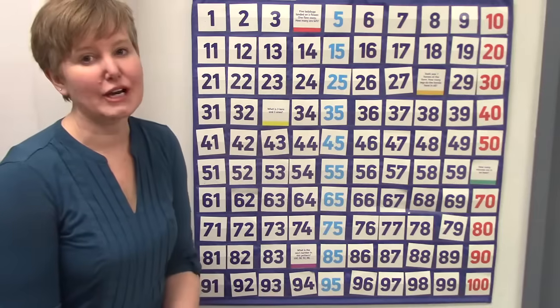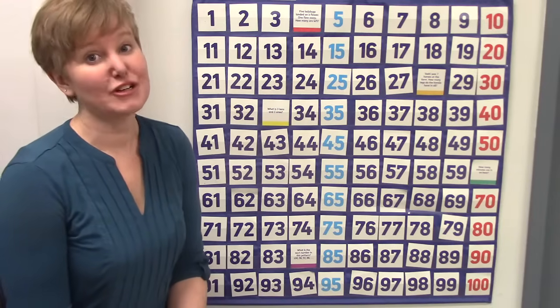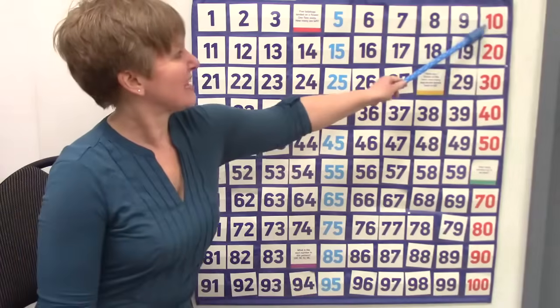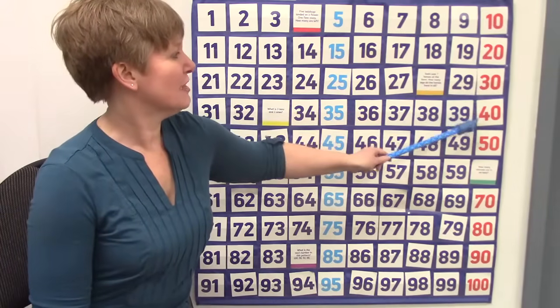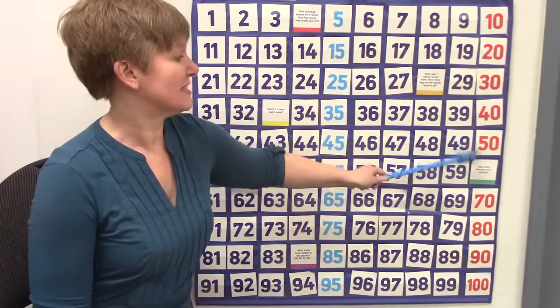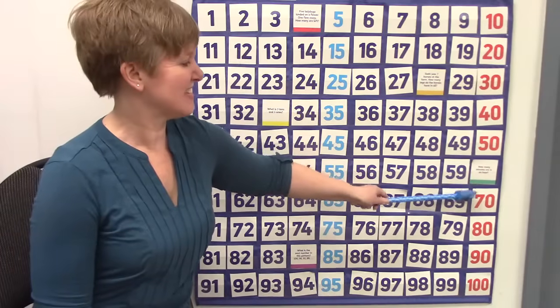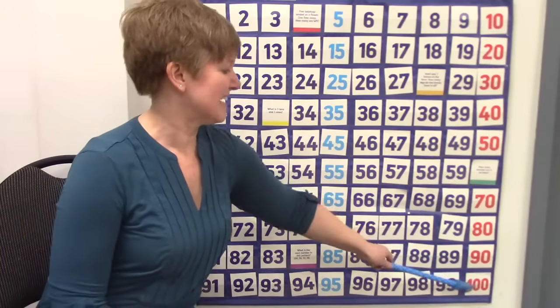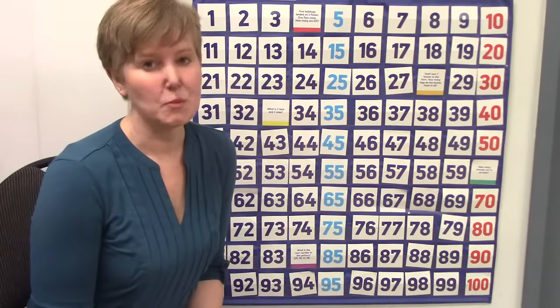Today, we're going to count by 10 and we're going to start at 10. 10, 20, 30, 40, 50, 60, 70, 80, 90, 100. What number would come next? 110.